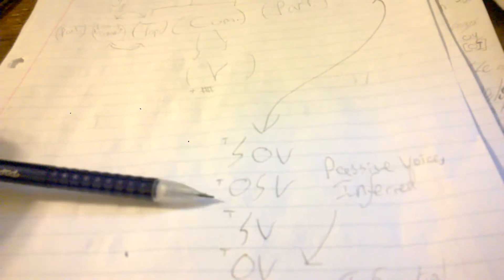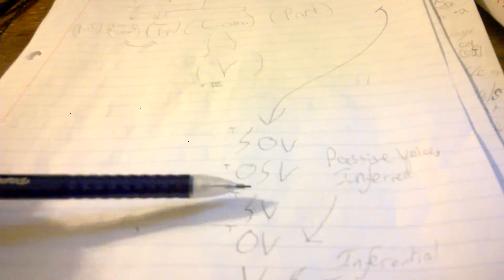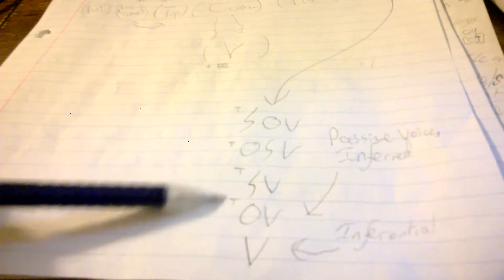This can arise with several different types of sentence structures. It can be SOV, in which the subject is the topic, or OSV, in which the object is the topic. Just SV, so something does something - subject is the topic. Or OV, the object is the topic.